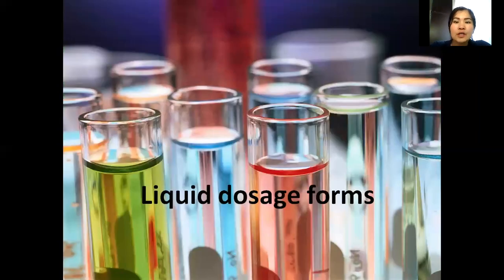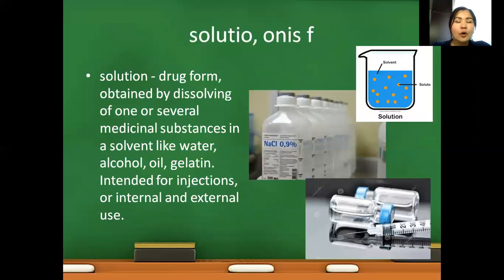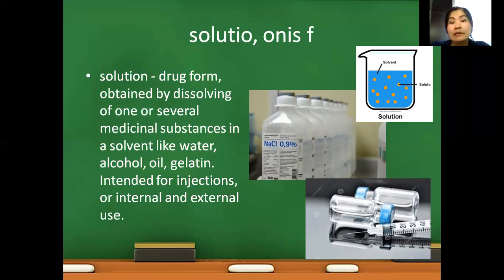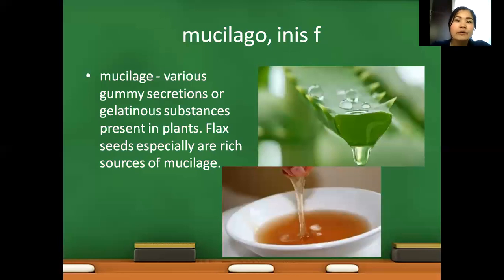The first group is liquid dosage forms. Solution — a drug form obtained by dissolving of one or several medicinal substances in a solvent like water, alcohol, or oil, intended for injections or internal and external use. Musilago — musilage — various gummy substances, gummy secretions or gelatinous substances present in plants. For example, flax seeds are an especially rich source of musilage, and aloe vera is also a plant which is very rich in musilage.